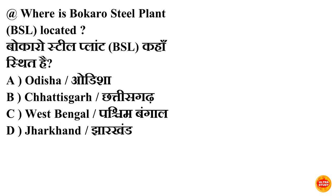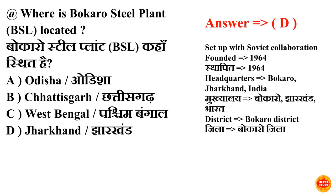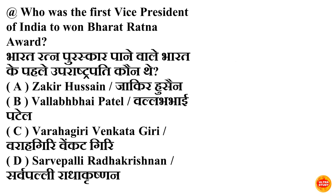Next question: where is the Bokaro Steel Plant located? Bokaro Steel Plant kahan sthit hai? Option D is correct — Jharkhand. Bokaro Steel Plant sthapit hua 1964 mein aur headquarters hai Bokaro, Jharkhand. District hai Bokaro district.